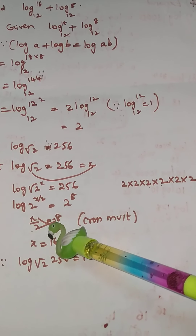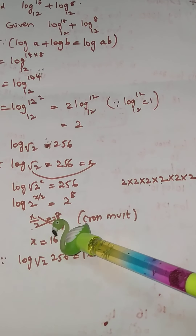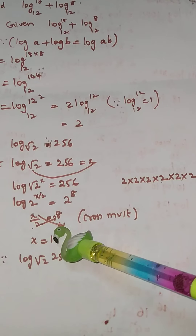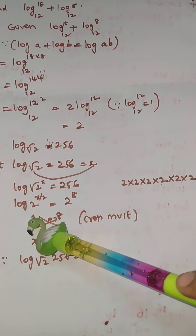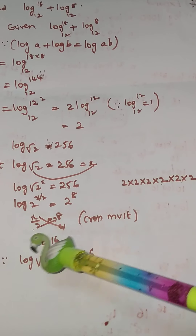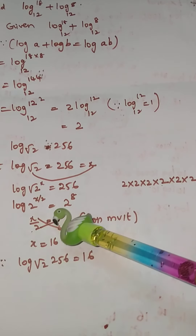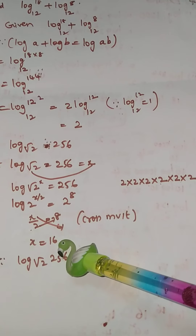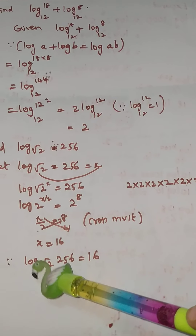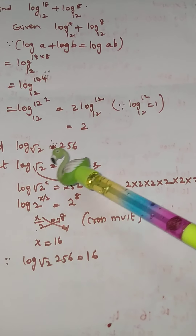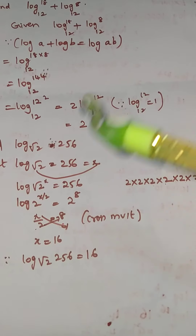Cross-multiplying, x = 8 × 2 = 16. Therefore log_{√2}(256) = 16.